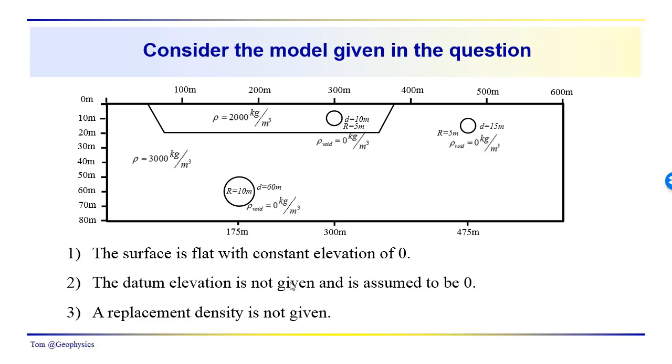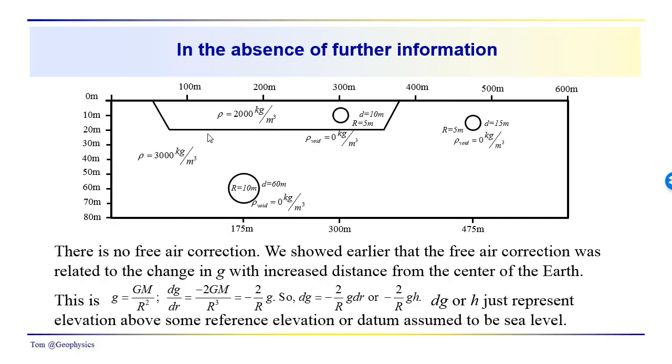The datum elevation isn't given, so we would be forced to assume something like zero. And a replacement density also isn't given. So what does that leave us with? Well, since the surface is flat and we assume that the datum elevation is zero, there is no free air correction.